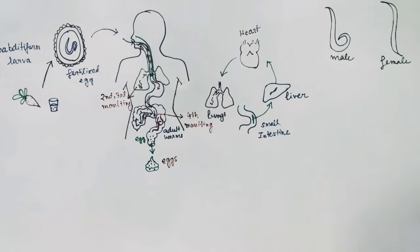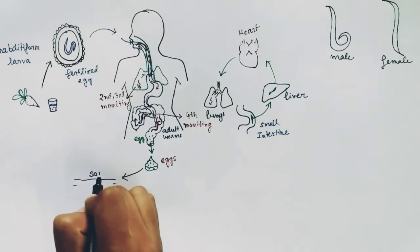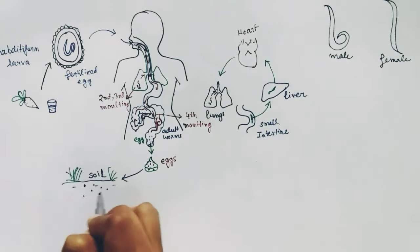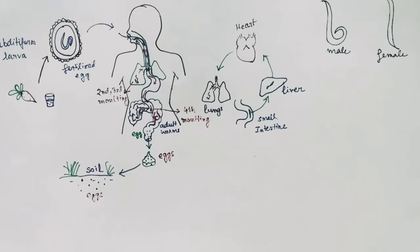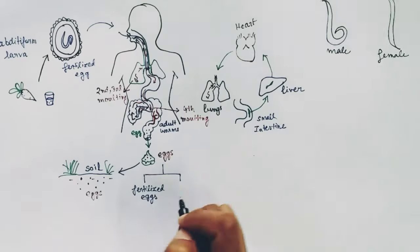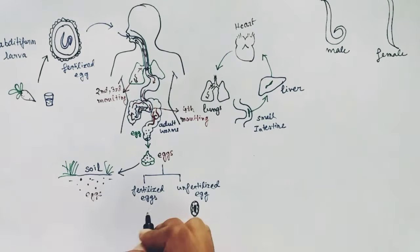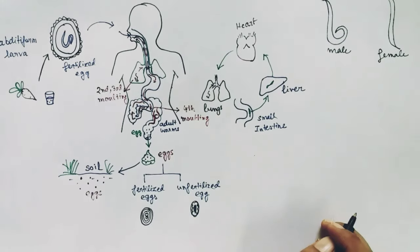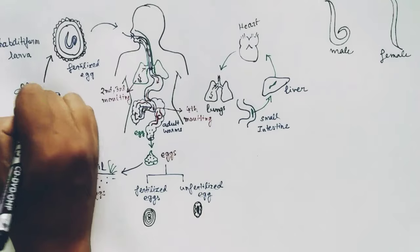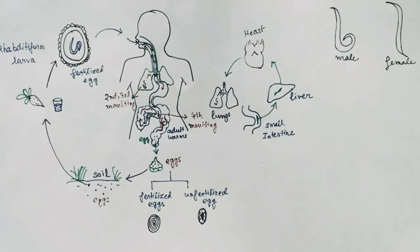These eggs in the feces contaminate other foods or vegetables and go to the soil. In the soil, the eggs undergo their first molting and form rhabditiform larvae. The eggs can be of two types: fertilized or unfertilized. Only the fertilized eggs can contaminate food and infect another human. The unfertilized eggs, produced without mating, cannot infect any human. The fertilized eggs, after first molting in the soil, contaminate food and get inside another human, continuing the life cycle of Ascaris lumbricoides.